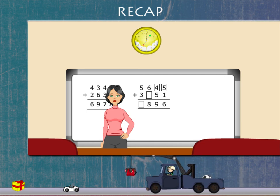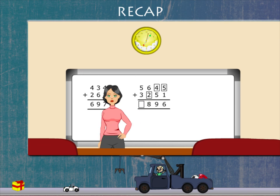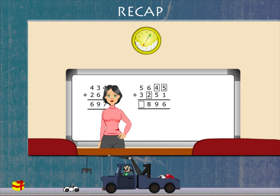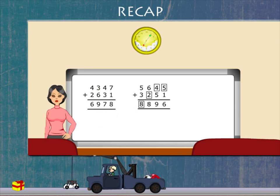She now takes the hundreds. 8 minus 6 is 2 and 5 plus 3 is 8.